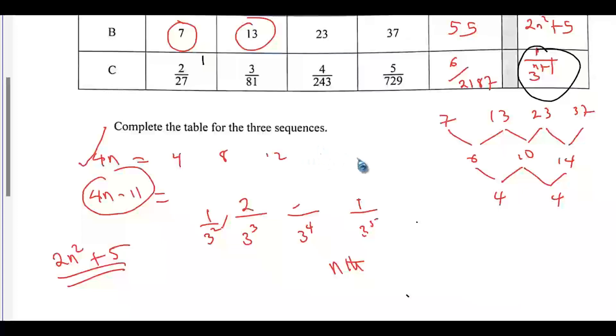You can see that the difference in the numerator is 1. That means the numerator should be n plus 1. If you have n to be equals to 1, that's the first term, you have 1 plus 1, which is 2. Second term will be 2 plus 1, which is 3. The denominator is also 3 to the power of 3, 3 to the power of 4, 3 to the power of 5 and so on. You can see that you have a difference of 1. If n equals 1, for us to get 3 to the power of 3, we need to add 2 to this. So the denominator will be 3 to the power of n plus 2.